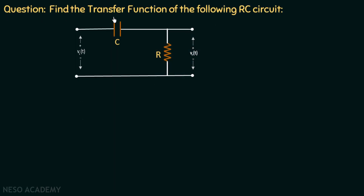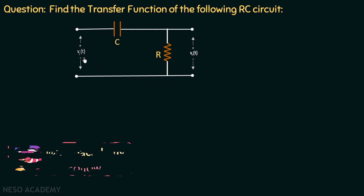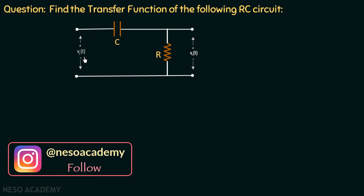Find the transfer function of the following RC circuit. The RC circuit is given to us. The input vi(t) is applied into the circuit and the output vout(t) is measured across the resistor.